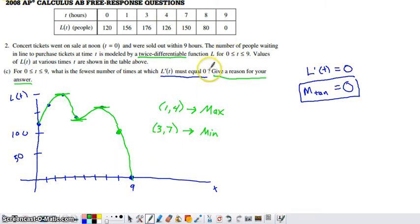And then again, to get from this y value to this y value, our graph is going to have to top out somewhere on the interval from 4 to 8. We're going to have to top out, so we're going to have to have another local max there.